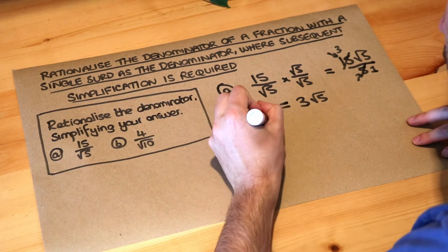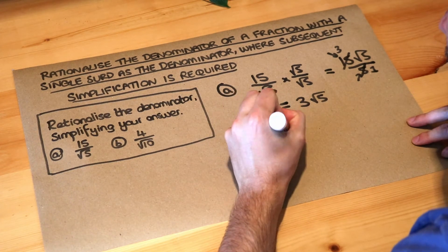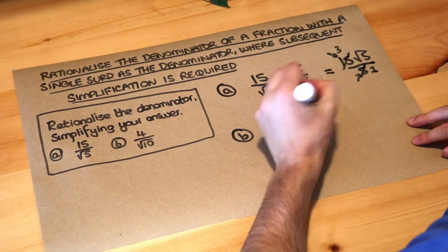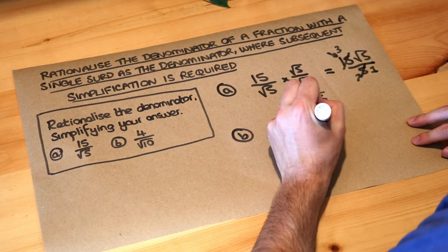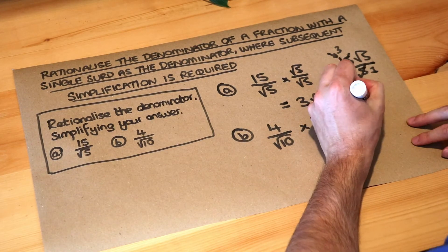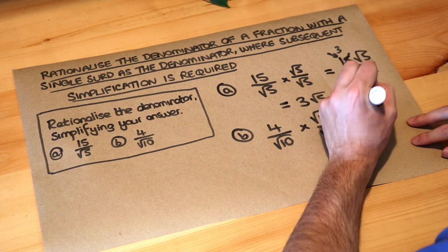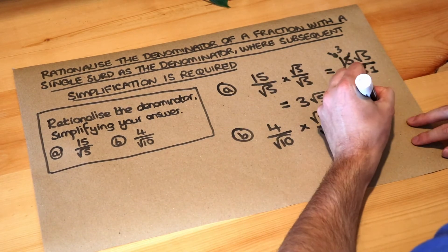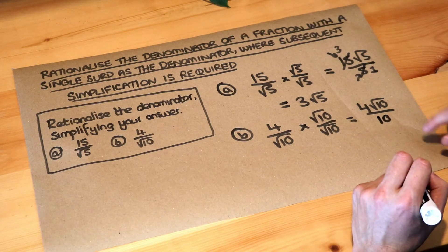Let's do the same for the second one. We've got 4 over root 10. As above, we times the top and bottom of the fraction by whatever we have in the denominator, root 10 over root 10. So the top is just 4 times root 10, which is 4 root 10. And at the bottom, we have root 10 times root 10. Any surd times itself is just the number itself without the root, so it's 10.